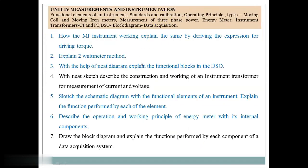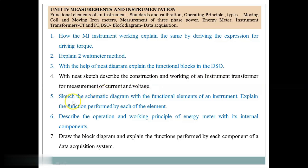Unit 4 is Measurement and Instrumentation. Seven questions are considered as important. Question 1: How does the MI (Moving Iron) instrument work? Explain by deriving the expression for driving torque. Question 2: Explain the two wattmeter method — that is, the power measurement technique. Question 3: With the help of a neat diagram, explain the functional blocks in the DSO (Digital Storage Oscilloscope). Question 4: With a neat sketch, describe the construction and working of an instrument transformer for measurement of current and voltage. Question 5: Sketch the schematic diagram with the functional elements of an instrument and explain the function performed by each element — this is available in the introduction part of Unit 4 under functional elements of an instrument.